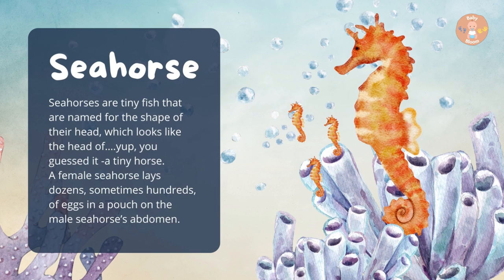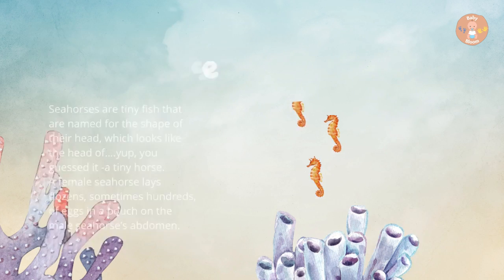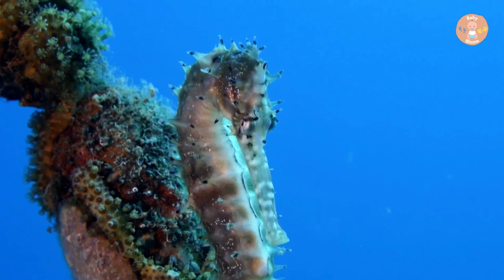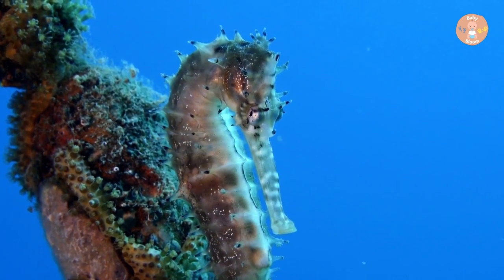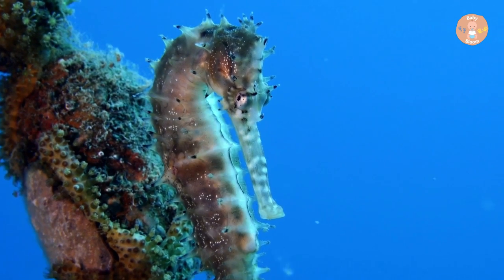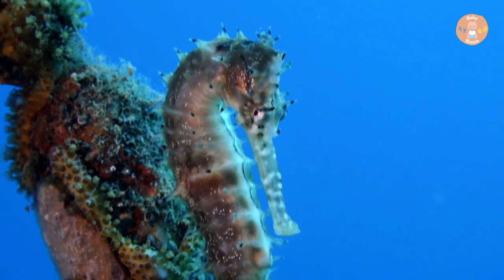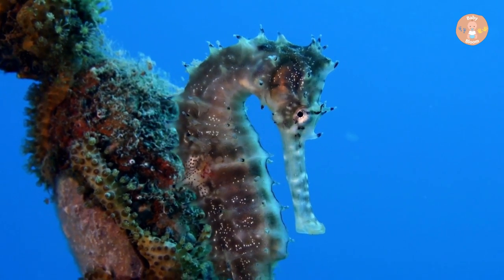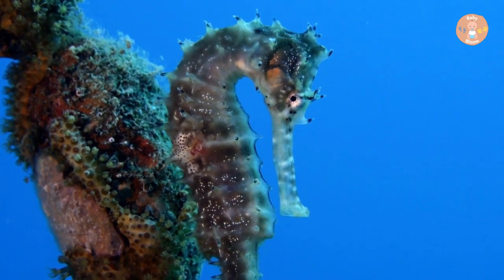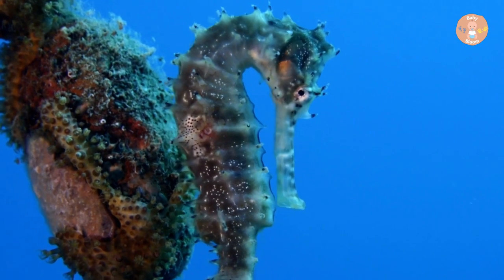Seahorse. Seahorses are tiny fish that are named for the shape of their head, which looks like the head of — yep, you guessed it — a tiny horse. A female seahorse lays dozens, sometimes hundreds of eggs in a pouch on the male seahorse's abdomen.